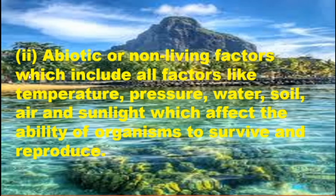Temperature varies all over the world — some areas have cool conditions, others have hot conditions. Pressure also varies. Water and its mineral content vary — fresh water, salt water. Soil conditions differ, with different nutrients present. Sunlight also varies. If these abiotic conditions are not good, adaptation is not possible for all living organisms, so living organisms adapt according to the available nutrients in the ecosystem.